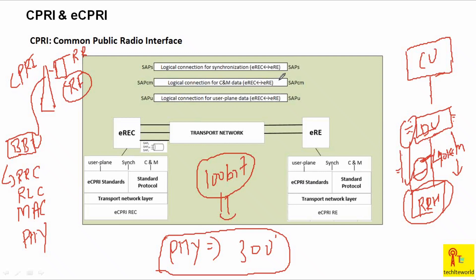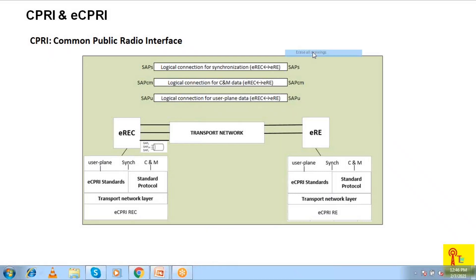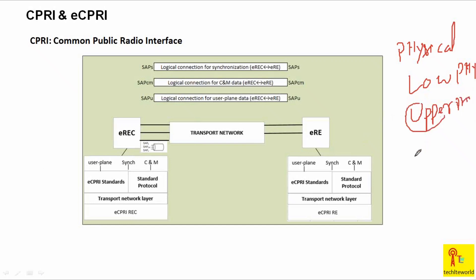To prevent this situation, technocrats came up with one solution: eCPRI. eCPRI is Evolved Common Public Radio Interface. In eCPRI, what we are doing is splitting the physical layer into two parts: lower PHY layer and upper PHY layer.